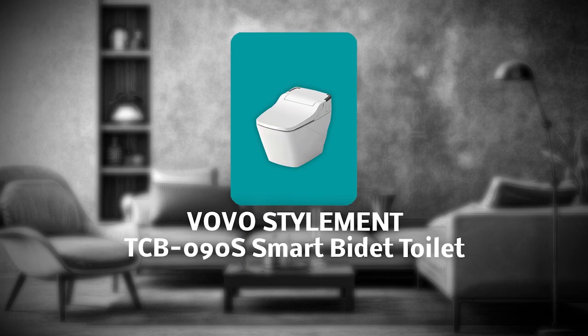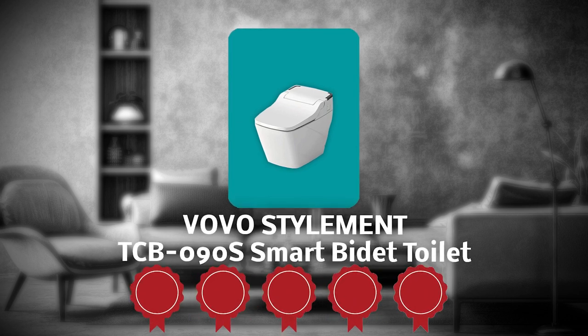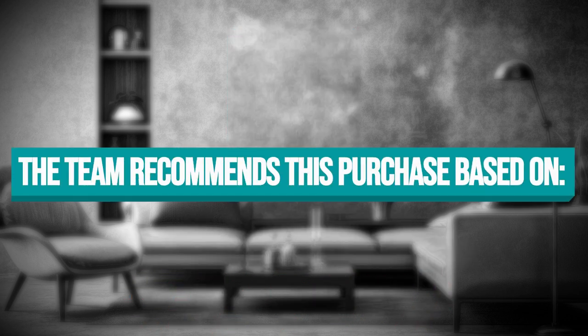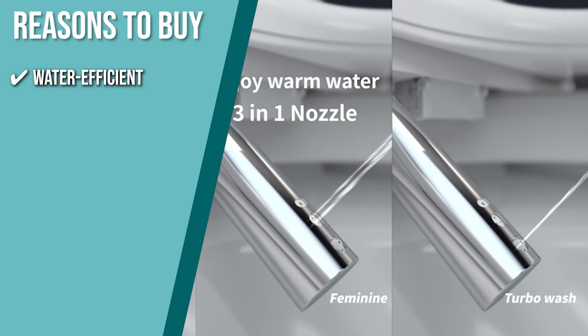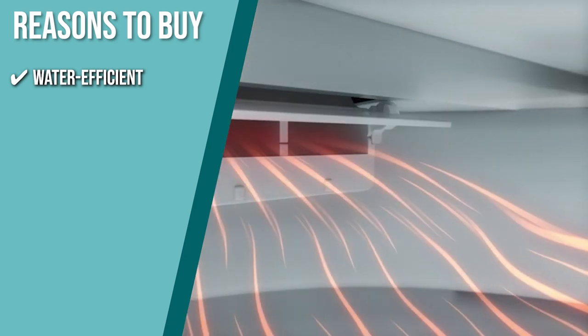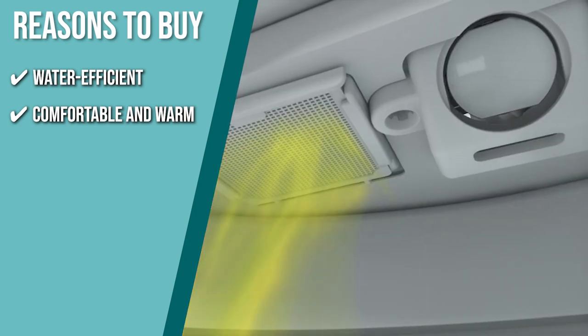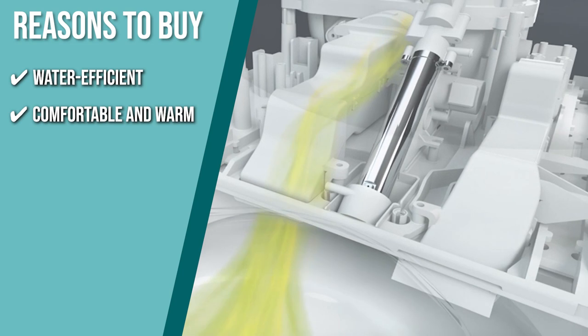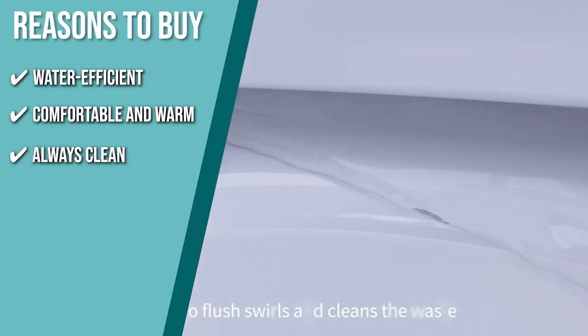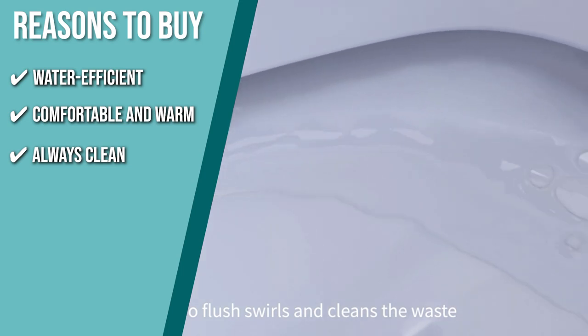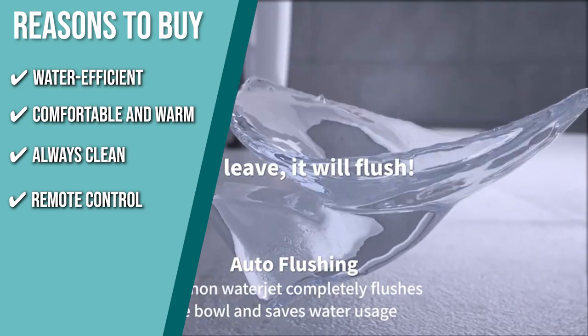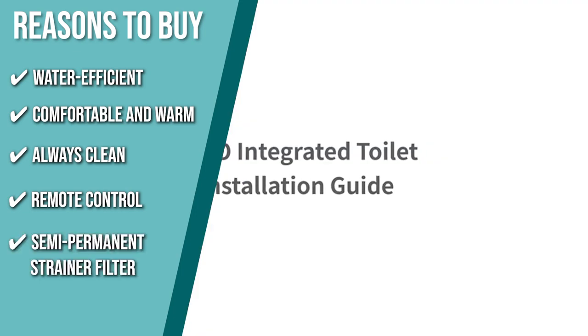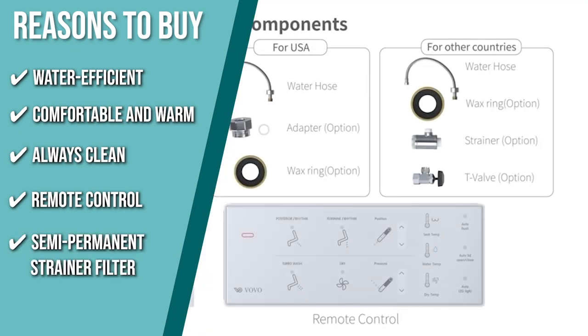TrustedShoppingGuide.com has awarded the VOVO Stylement TCB090S Smart Bidet Toilet a 5 badge rating. The team recommends this purchase based on the following. Water Efficient: In order to help you conserve water, it has an automatic flushing system that distinguishes between full flushes and little flushes based on how long you have been sitting. Comfortable And Warm: Aside from having a heated seat, the toilet also offers warm water and a built-in air dryer with three adjustable temperatures. Always Clean: The smart toilet boasts a UV-LED sterilization system that cleans the bowl for hygienic use. Remote Control: You can select wash functions, choose temperatures, and control your smart toilet right from your hand using the included wireless remote control. Semi-permanent strainer filter: This is designed to trap and remove debris particles in the water, providing clean water while maintaining constant water pressure.